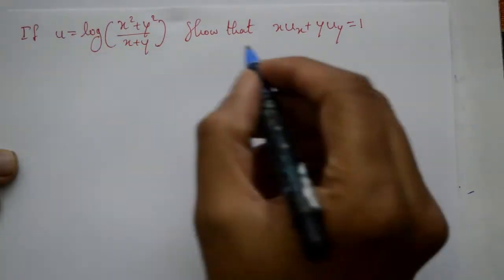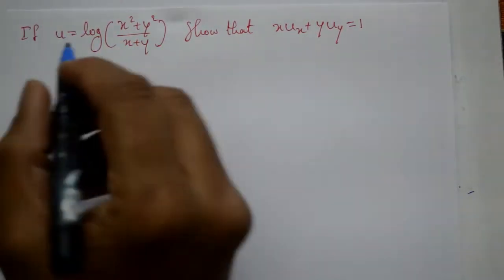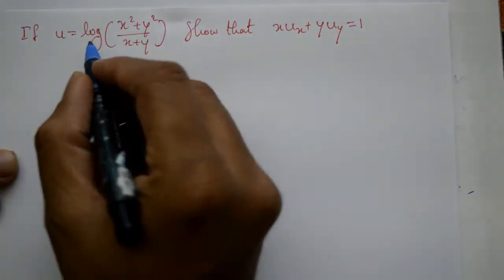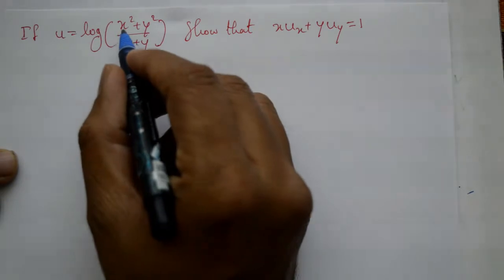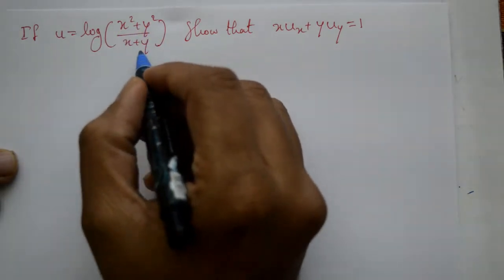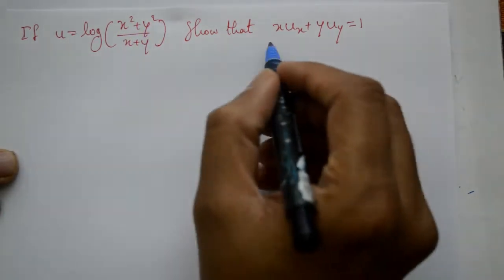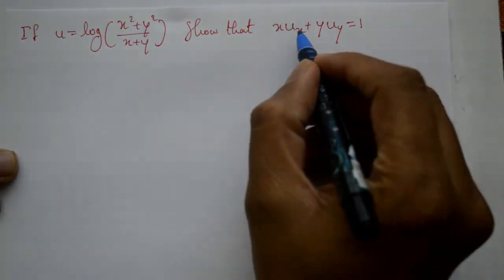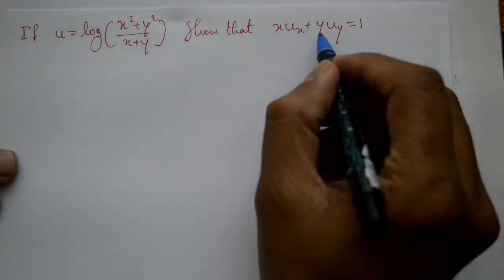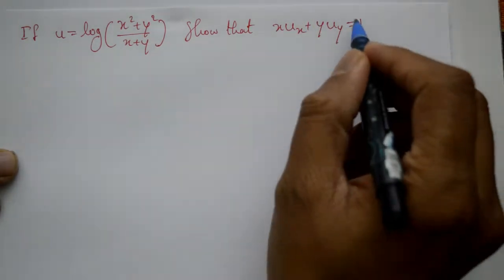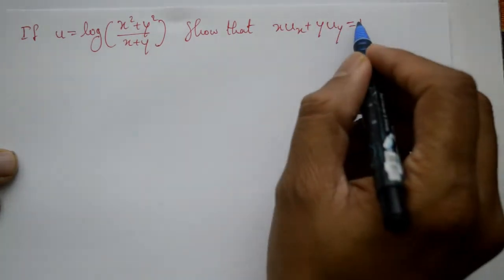Welcome friends, this problem ko solve karenge. If u is equal to log of x square plus y square divided by x plus y hai, then show that x into dou u by dou x plus y into dou u by dou y equal to 1 — yahi humko dekhana hai.